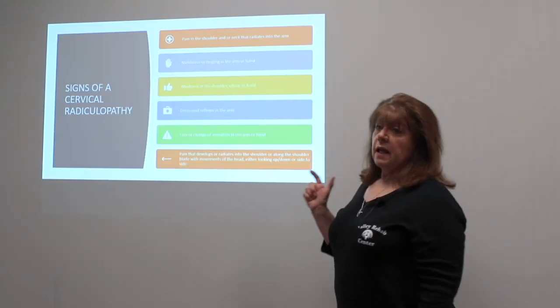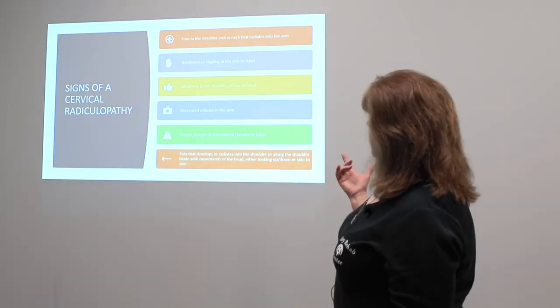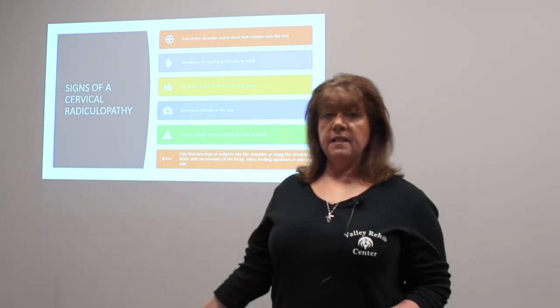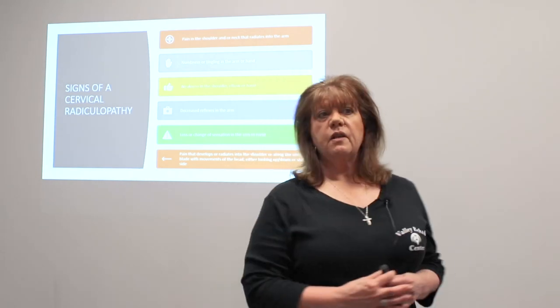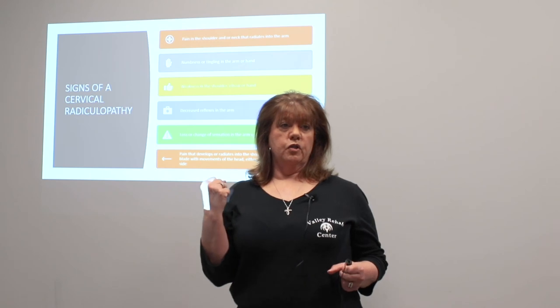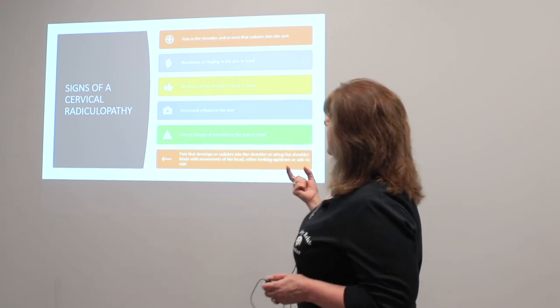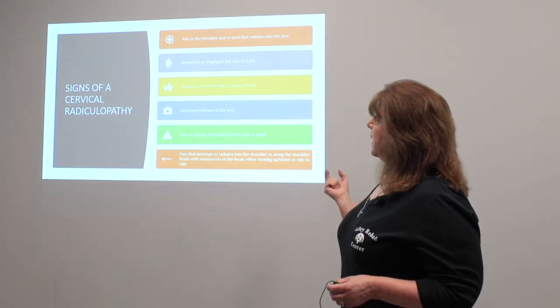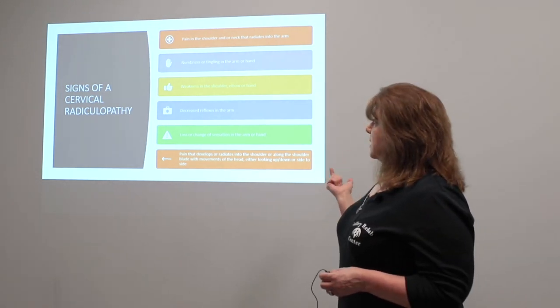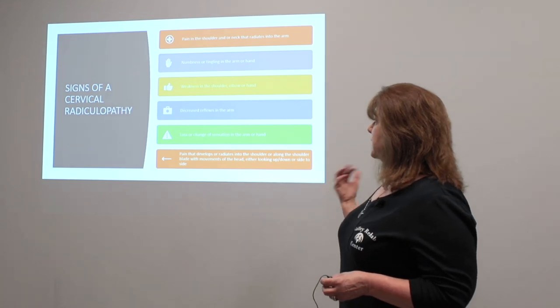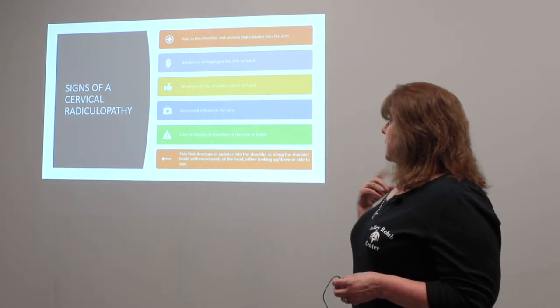Signs of cervical radiculopathy include shoulder or neck pain that radiates down the arm. A lot of people complain of pain radiating along their shoulder blade, or a feeling of a knot under the shoulder blade — those are symptoms of radiculopathy. They might have numbness or tingling in the arm or hand, weakness in the shoulder, elbow, or hand, decreased reflexes, and loss of sensation. The pain can be made worse by looking up or down, which indicates a cervical alignment issue causing nerve impingement.